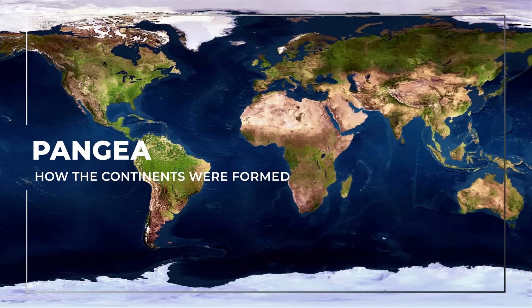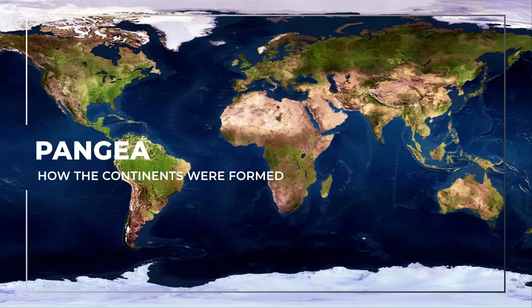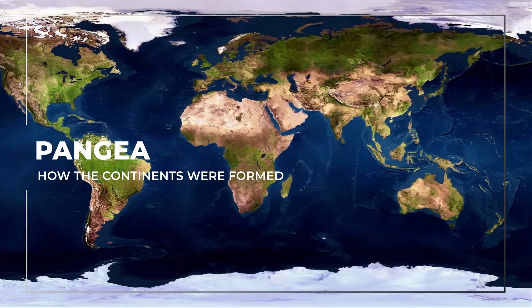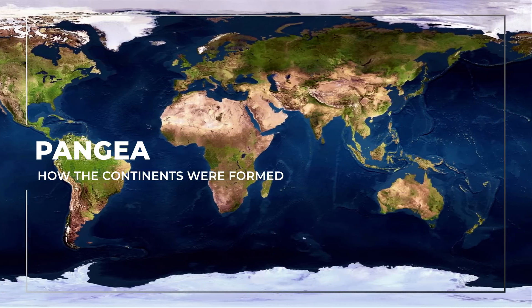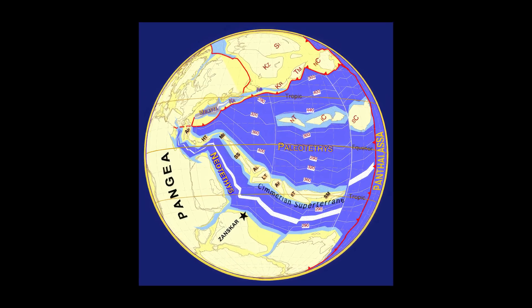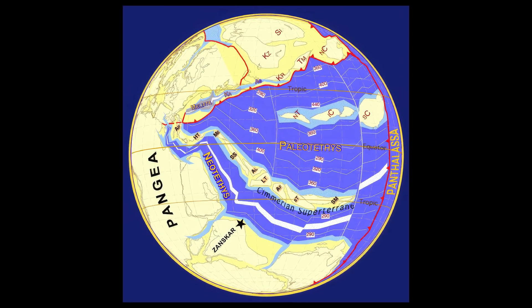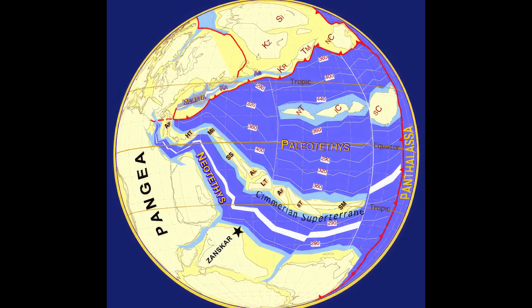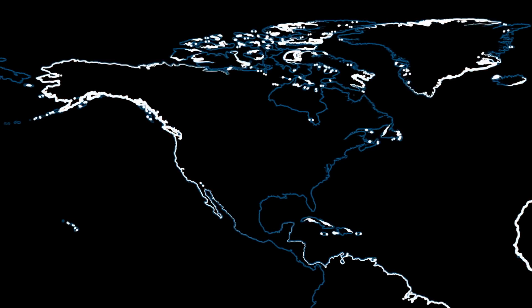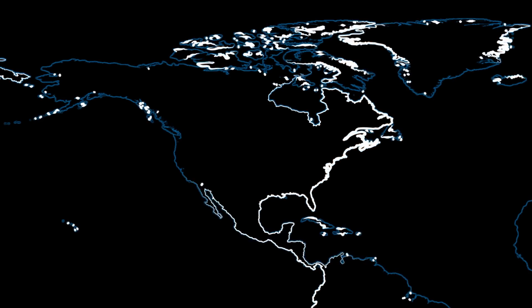How the continents were formed. Did you know that the continents we see today are not the same as they were millions of years ago? They were all part of one huge landmass called Pangaea. But how did Pangaea break apart and form the continents we know today?